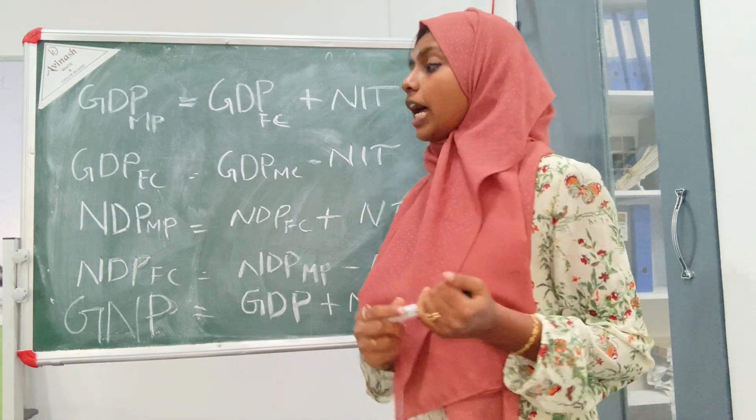NDP — Net Domestic Product — at market price and at factor cost. NDP factor cost plus net indirect tax gives NDP market price. NDP market price minus net indirect tax gives NDP factor cost. This is the same relationship as with GDP.